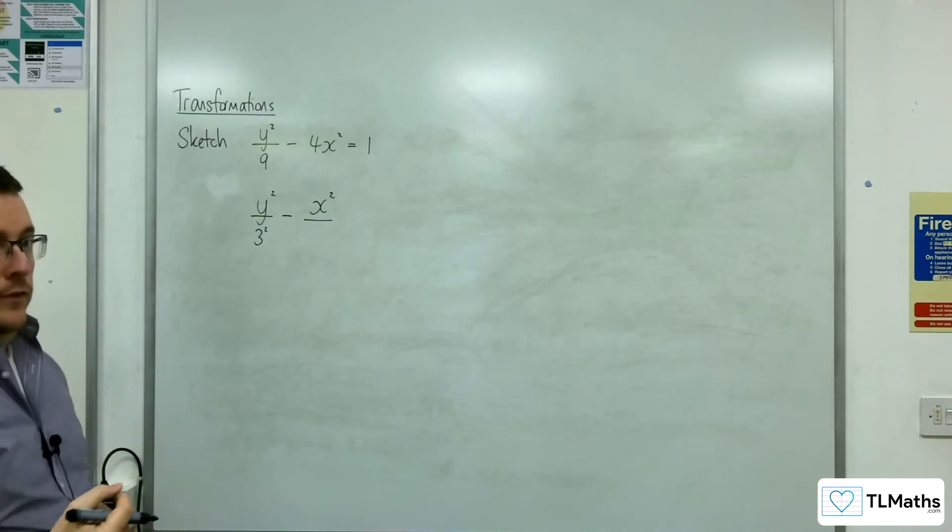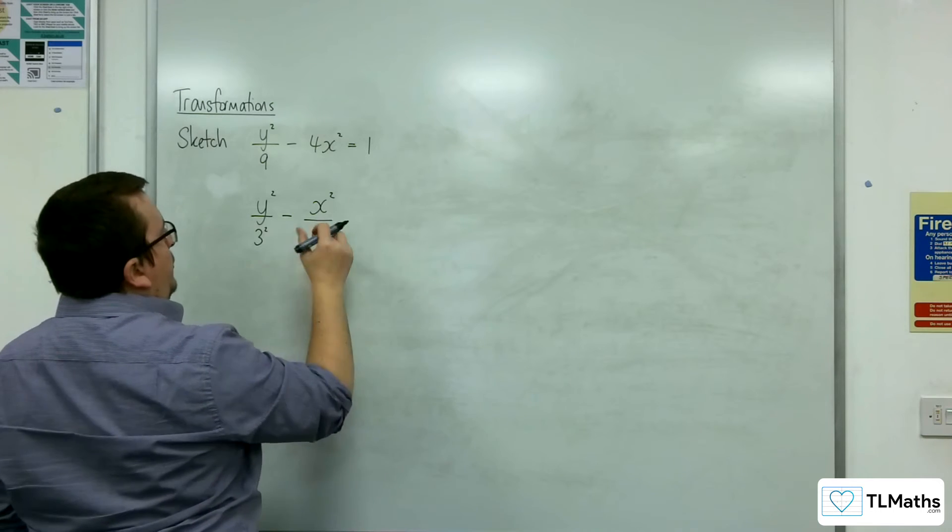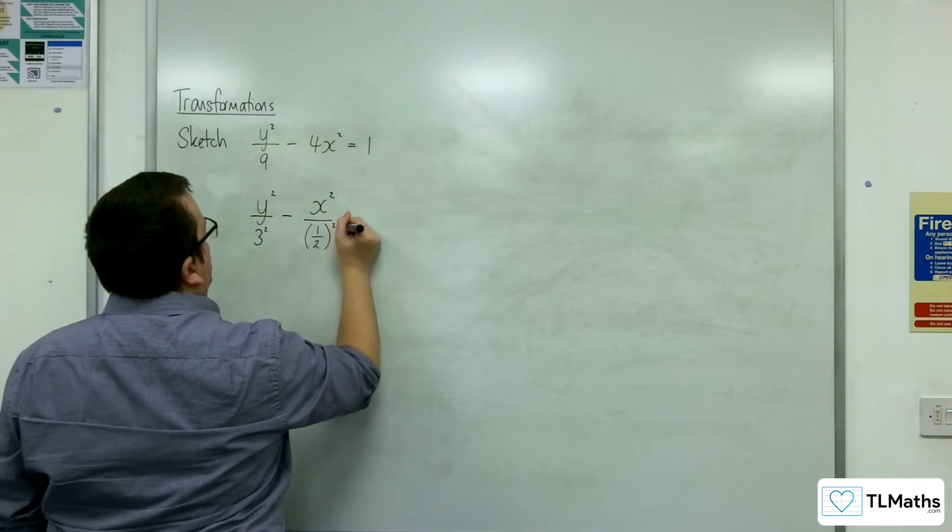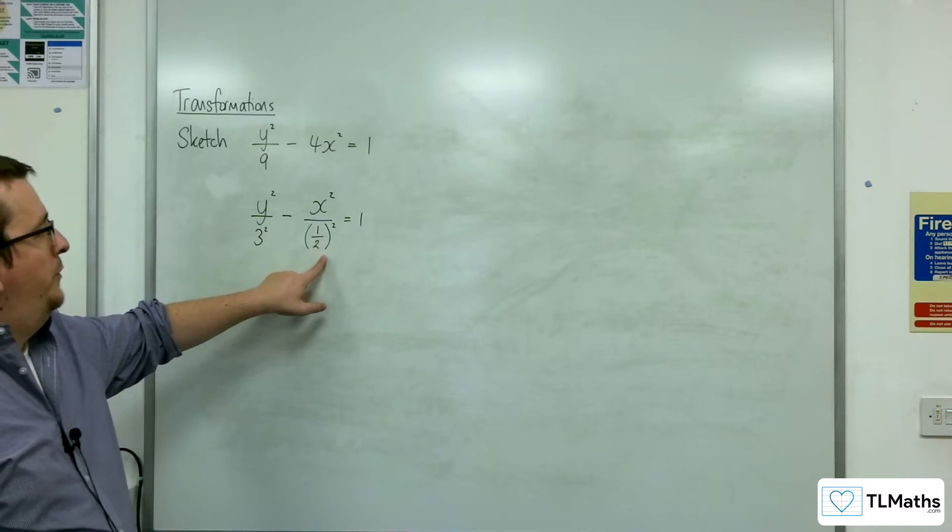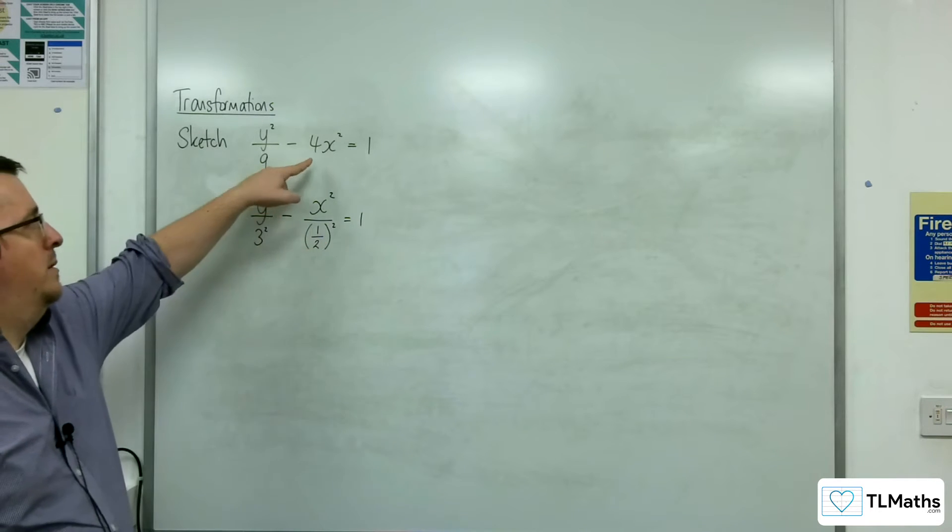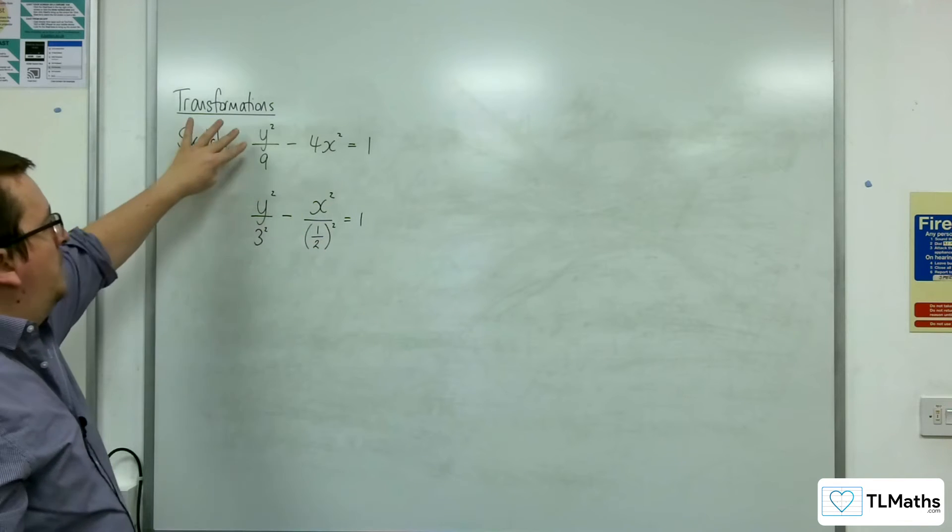now I'm going to write this as over 1 quarter which is over 1 half squared equals 1. So 1 half squared is a quarter, divided by a quarter is the same as multiplying by 4. So these are both the same.